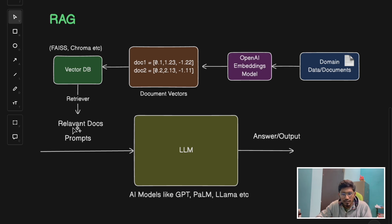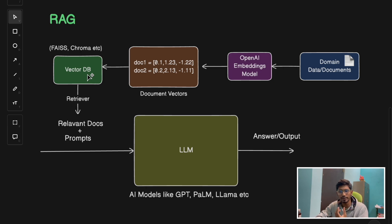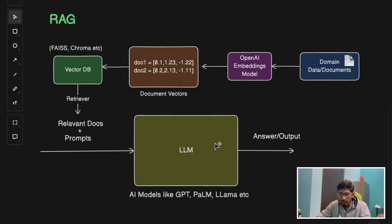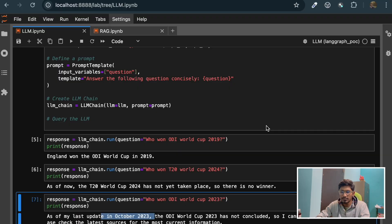Once the document information is encoded in the vector database, we'll use a retriever. Along with the prompt, we'll pass the relevant documents which will be helpful to answer the given query. The job of the retriever is to retrieve some relevant documents from the vector database, then combine them with the prompt, and then generate the answer. These two things will be passed to the LLM and it will generate the output.